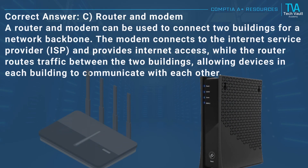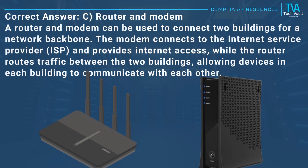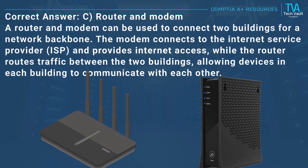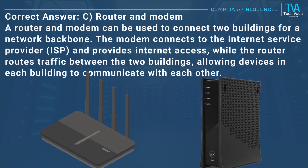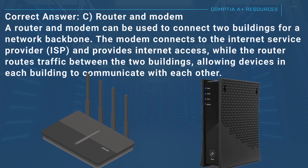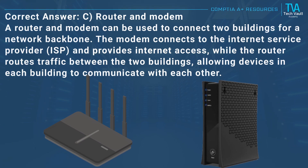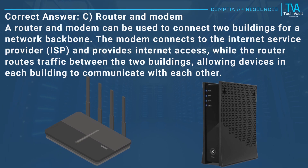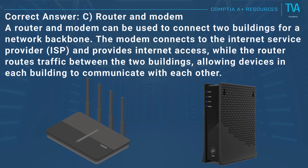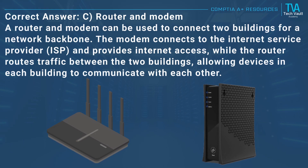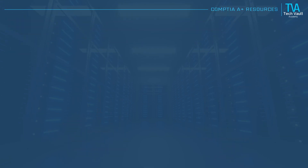Correct answer: C, router and modem. A router and modem can be used to connect two buildings for a network backbone. The modem connects to the Internet Service Provider (ISP) and provides internet access, while the router routes traffic between the two buildings, allowing devices in each building to communicate with each other.